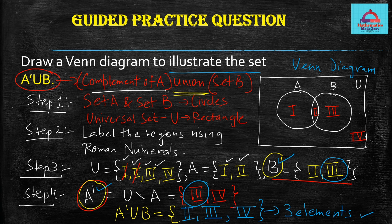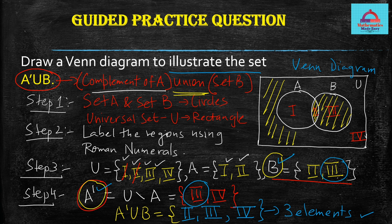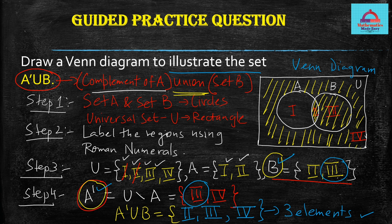Now shade the final answer in the Venn diagram. Regions II, III, and IV are shaded — that is the whole of B and the outside region IV. In a way, only region I is removed and everything else is part of the shaded area. That completes the solution — I hope it was clear how to draw the Venn diagram and illustrate the given set.